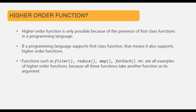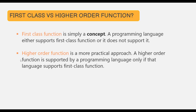Many people think that first class function and higher order function are the same thing, but that's not true. First class function is simply a concept — a programming language either supports it or it does not. On the other hand, higher order function is a more practical approach. A higher order function is supported by a language if that language supports first class functions. The presence of first class functions implies the presence of higher order functions, but the presence of higher order functions does not imply the presence of first class functions. Higher order functions are just like regular functions with the added ability of receiving and returning another function as argument and output.